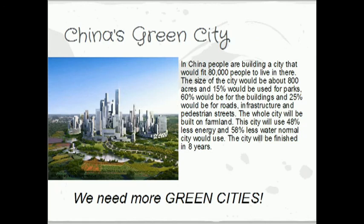China's Green City. In China, people are building a city that would fit about 80,000 people. The size of the city will be about 800 acres: 15% will be used for parks, 60% for buildings, and 25% for roads. The whole city will be built on farmland. This city will use about 48% less energy and 58% less water than a normal city would use. The city will be finished in eight years.